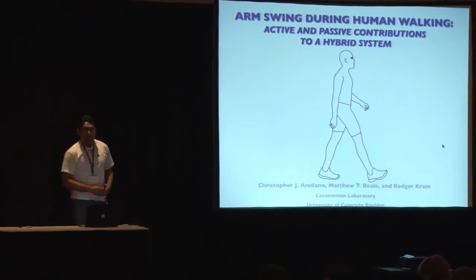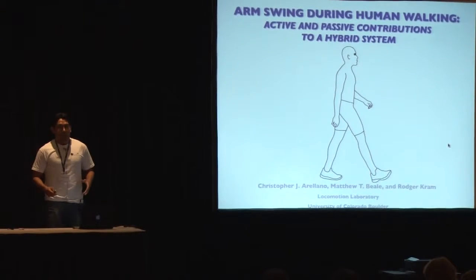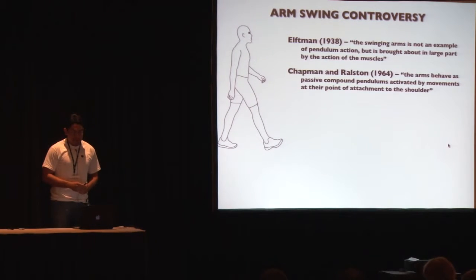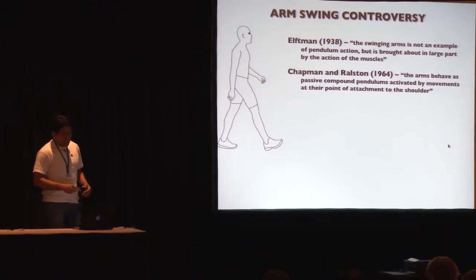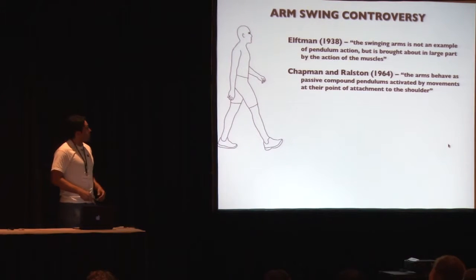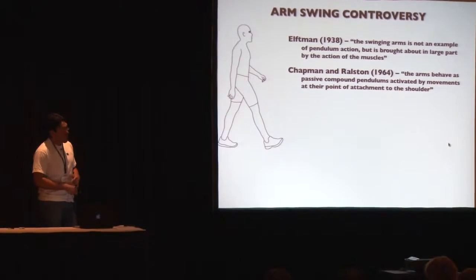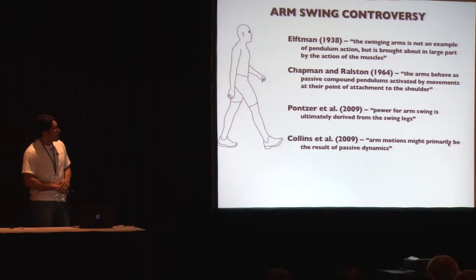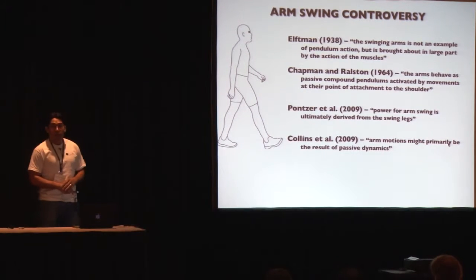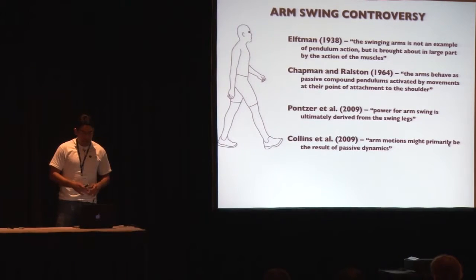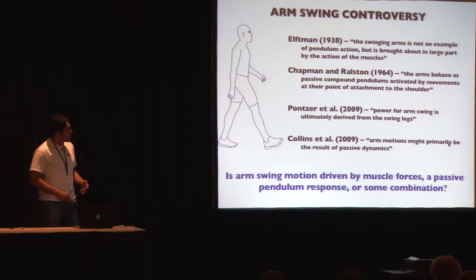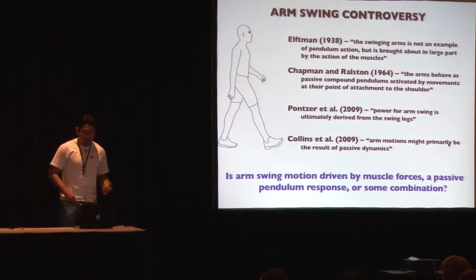Today my talk is focused on arm swing during human walking, with an emphasis on exploring the active and passive contributions to what I termed a hybrid system. Controversy exists as to the underlying mechanism that produces arm swing in motion. From the early to mid-1900s, some prominent biomechanists suggested that arm swing was a result of muscle forces, whereas Chatelain and Ralston suggested the arm's movement is a passive pendulum. More recently in 2009, two interesting studies concluded that arm swing motion might result from passive dynamics. We asked: is arm swing motion driven by muscle forces, a passive pendulum response to body acceleration, or perhaps a combination?